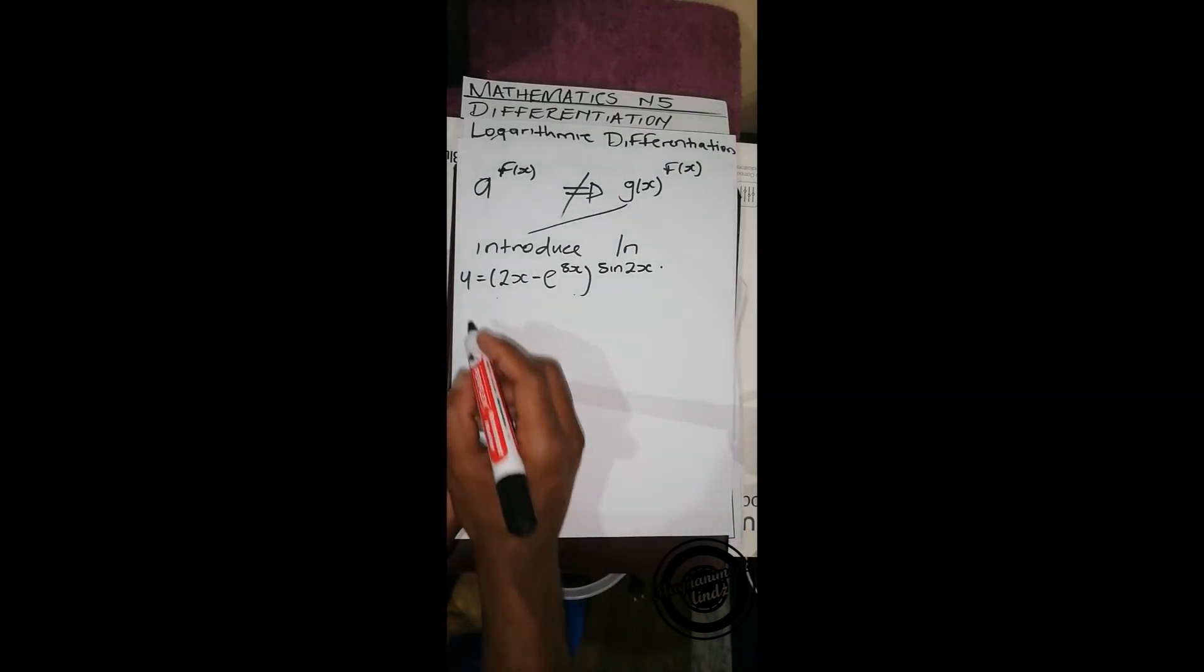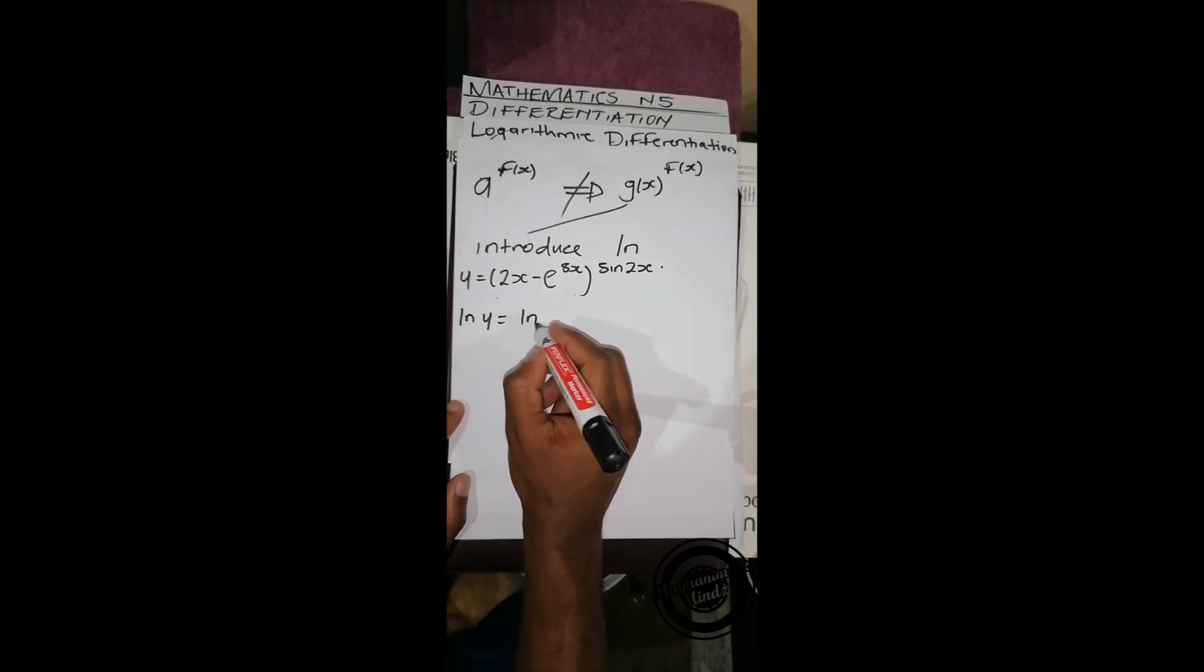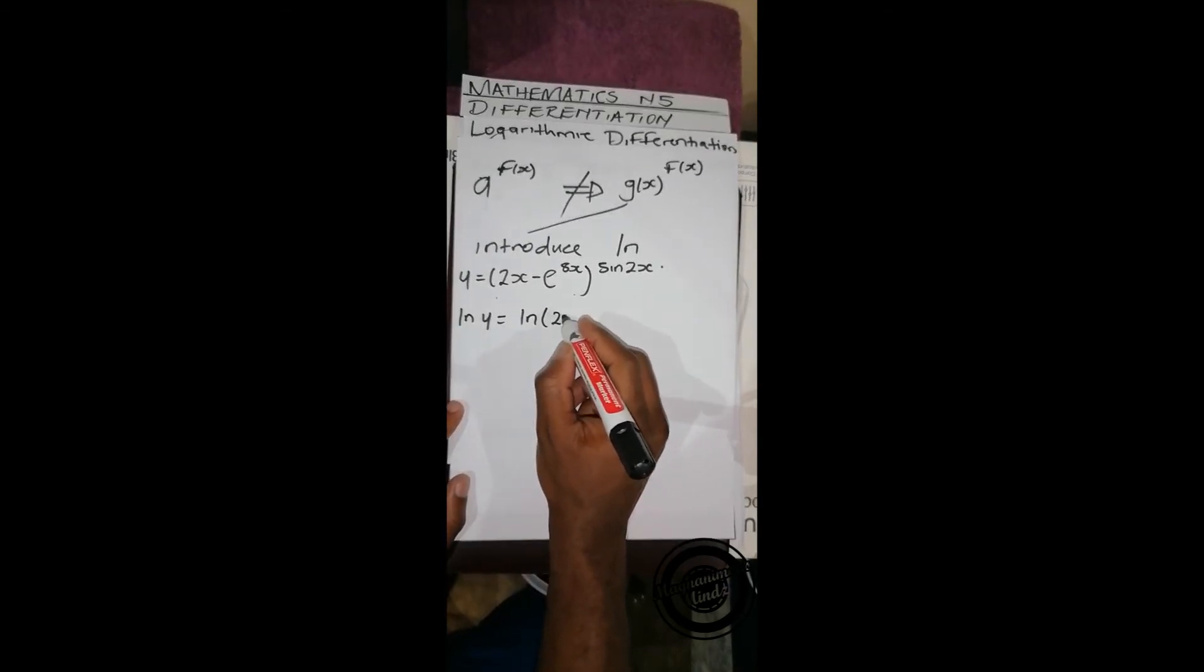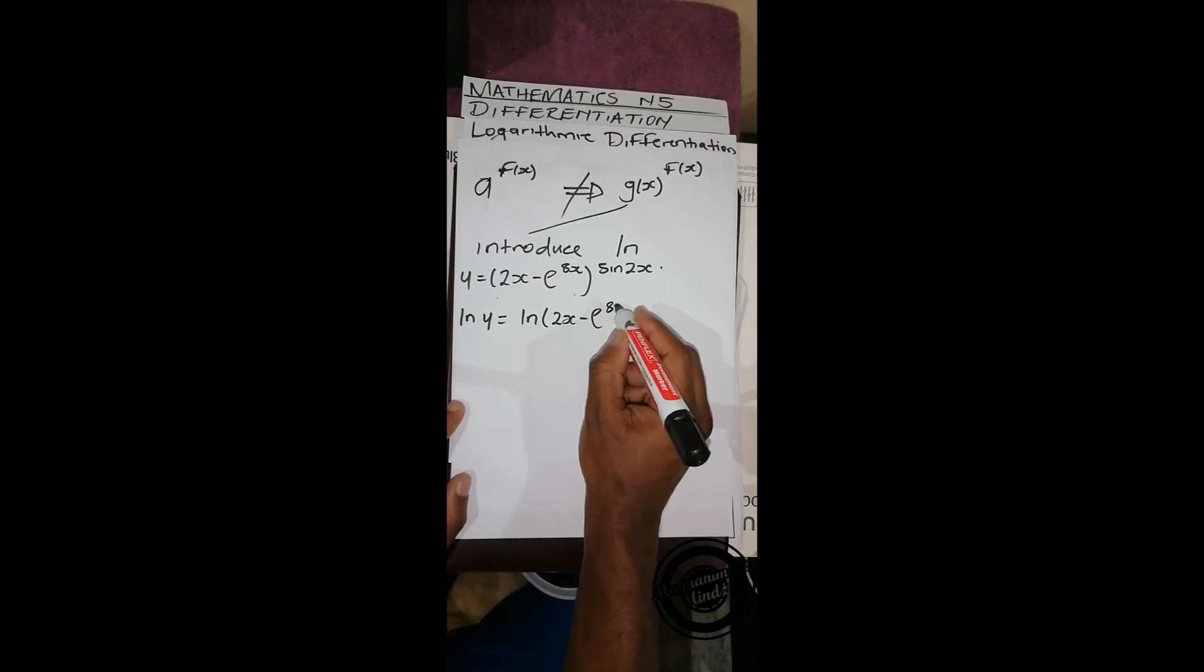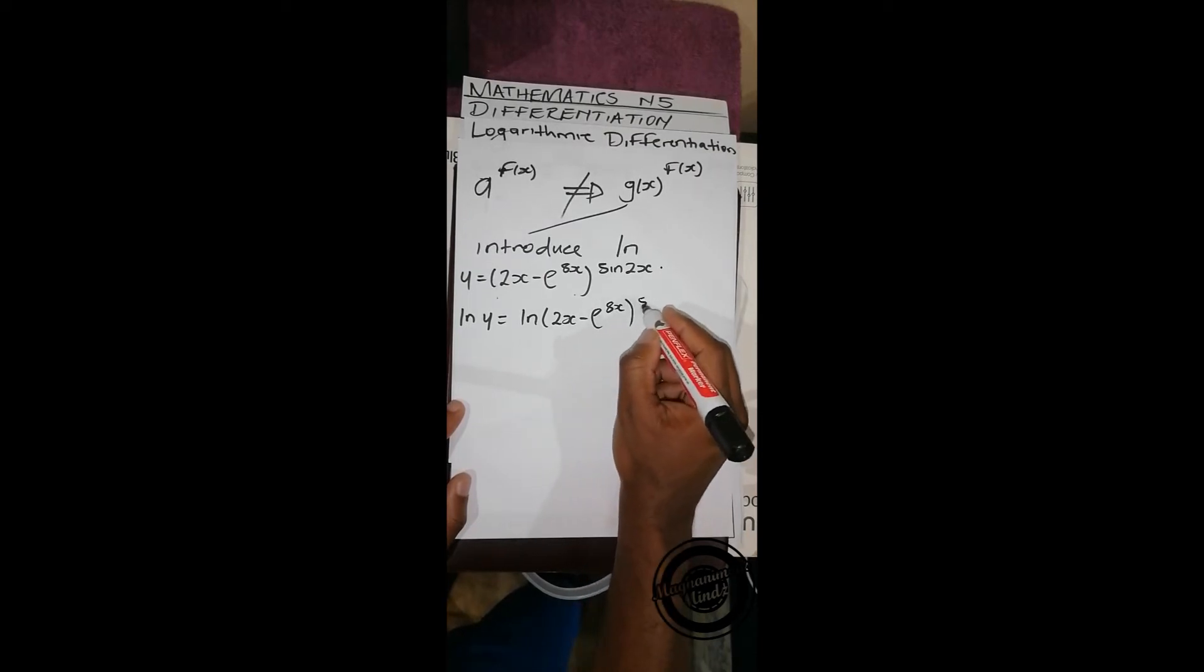So we'll introduce ln of (2x - e^(8x))^(sin 2x).